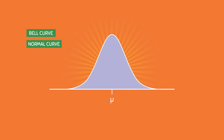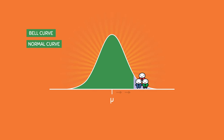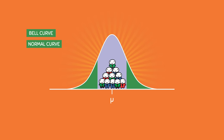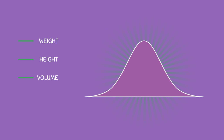For any normal distribution, some data points will fall below the mean, other data points will fall above the mean, but most of the data values are located near the mean. The normal distribution and its shape arises from many different variables found in nature, such as weight, height, volume, blood pressure, and many more. This is why the normal distribution is commonly studied.